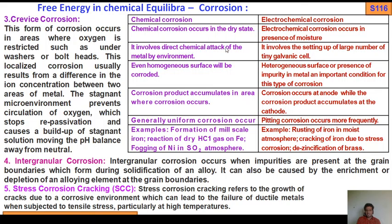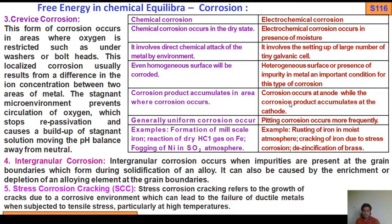Chemical corrosion involves direct chemical attack of the metal by the environment. Electrochemical corrosion involves the setting up of a large number of tiny galvanic cells — you know, anode, cathode — that will be discussed in the next slide.